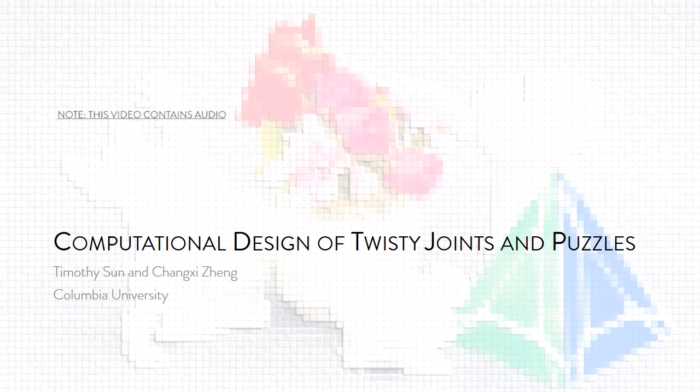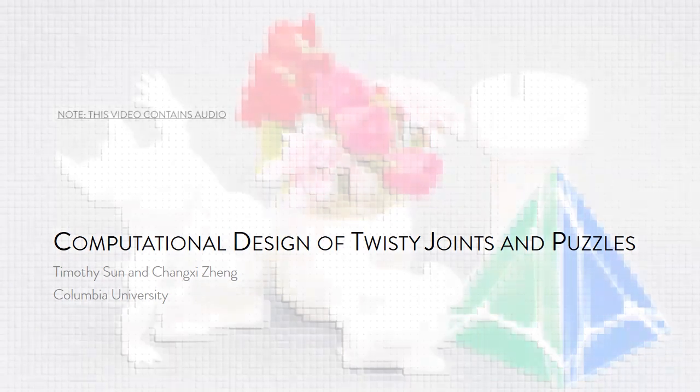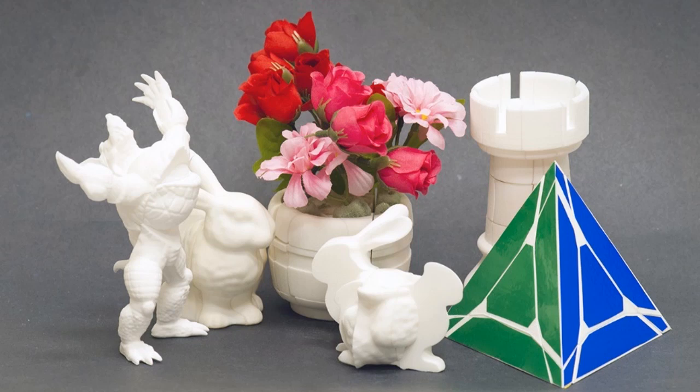We present a method for designing twisty puzzles and joints out of arbitrary 3D models. Given minimal user input, our algorithm outputs a set of pieces that can be directly 3D printed and assembled into fully functional puzzles.